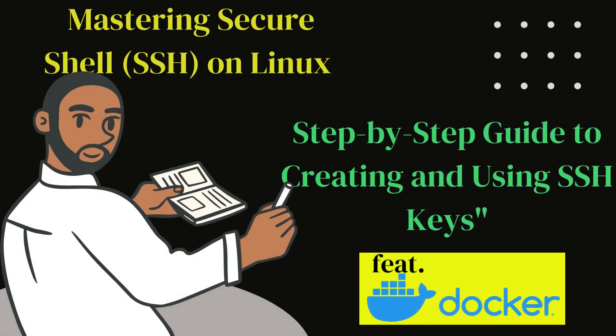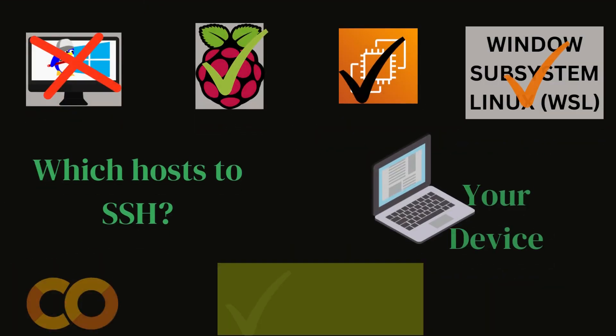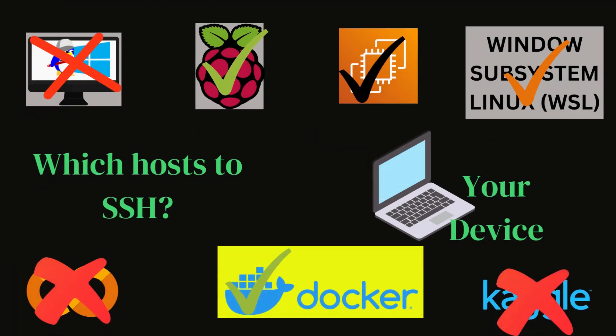Welcome to the Inside Builder channel. In this video we are mastering secure shell on Linux — a step-by-step guide to creating and using SSH keys. We will be doing these things using a Docker instance. If you think about how to do SSH in your day-to-day activity, you need to understand where to do SSH first. You have your device here, which could be a laptop or server, and you need to connect to a particular device.